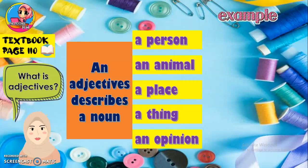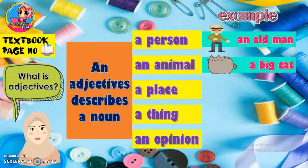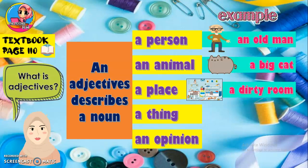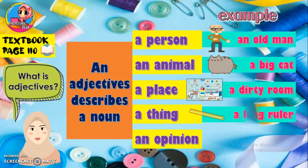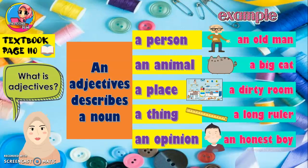Example — a person. We want to describe a person. Kita nak menerangkan tentang seseorang. An old man — seorang lelaki tua. A big cat — seekor kucing yang besar. A dirty room — sebuah bilik yang kotor. A long ruler — sebatang pembaris yang panjang. An honest boy — seorang budak lelaki yang jujur. So the words old, big, dirty, long, and honest are the adjectives.